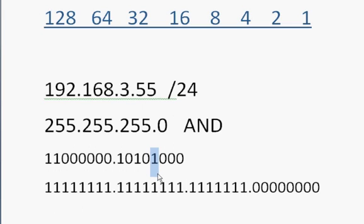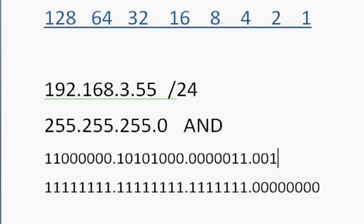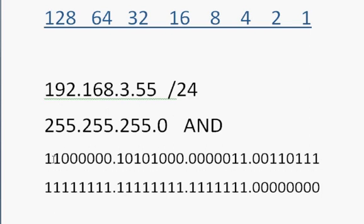Now the number 3 — that's pretty easy: 0, 0, 0, 0 for the upper bits, and then I need a 2 and a 1, so that's the number 3. And then the number 55: I need the 32 and the 16 — that's 48. Plus 4 is 52, plus 2 is 54, plus 1 is 55. That's correct. So now we have 192.168.3.55 fully written out in binary, with the subnet mask written below it in binary.